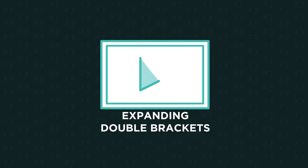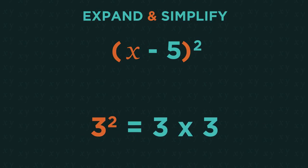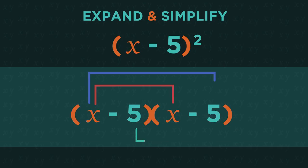So what do you reckon we do here? Just like 3 squared means 3 times 3, the squared here means the bracket times the bracket, and then expand it as you normally would for two brackets.